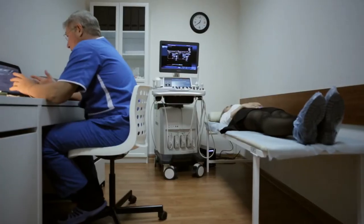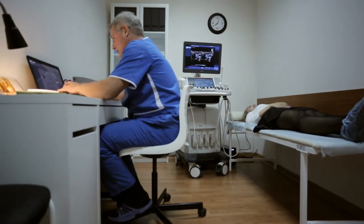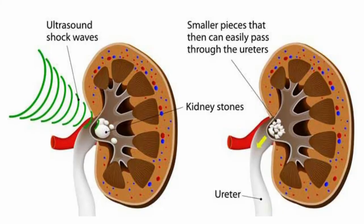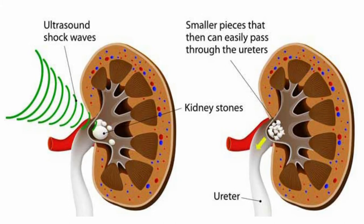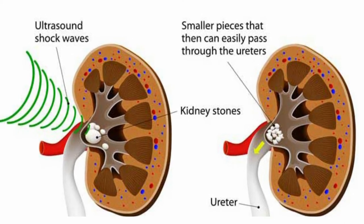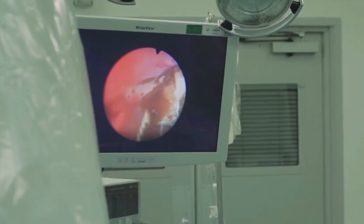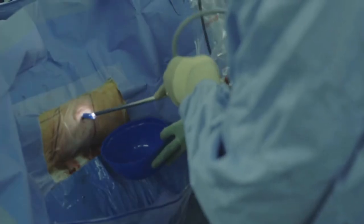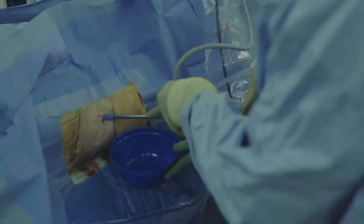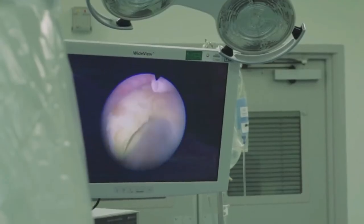For some kidney stones, depending on the size and the location, the doctor may need to use sound waves to break up the stones into tiny pieces that can be passed out in the urine. If sound wave treatment is unsuccessful, then the doctor may need to perform surgery by way of a small incision in your back and then use small telescopes and instruments to break up the stone.